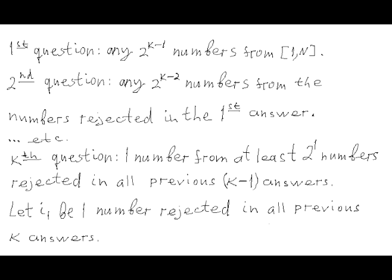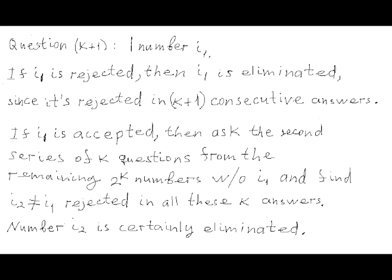Let's denote this number by I1. In question number K+1, B should specify one single number I1. If I1 is rejected, this number can be eliminated since it has been rejected in K+1 consecutive answers. If I1 is accepted, B should ask a second sequence of K questions based on 2^K numbers which exclude number I1, and find another number I2 using the analogous algorithm — a number that has been rejected in all of the second group of K answers. Then number I2 can be eliminated.